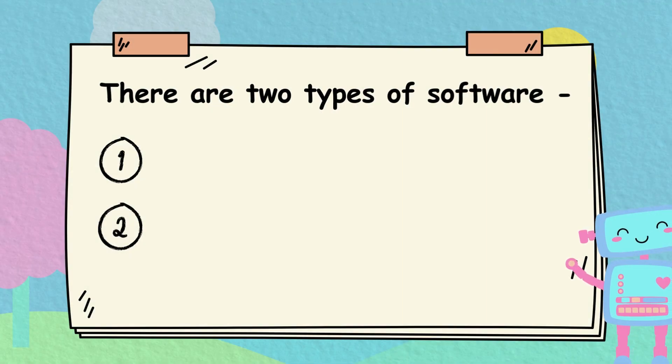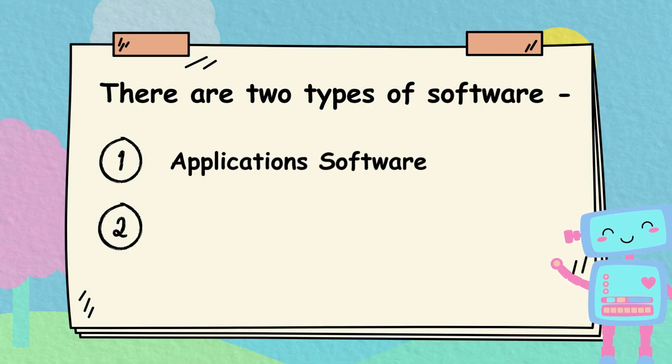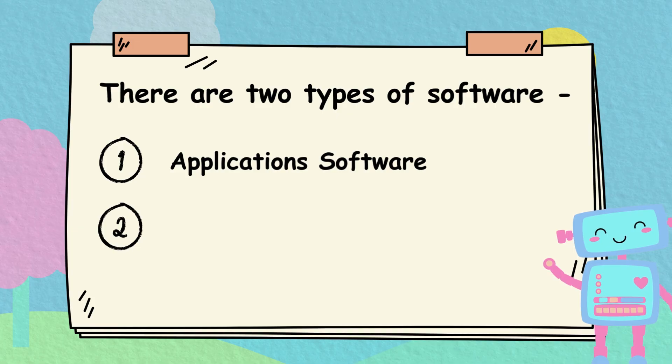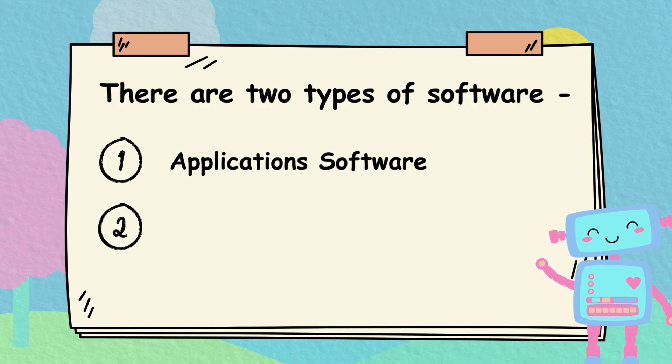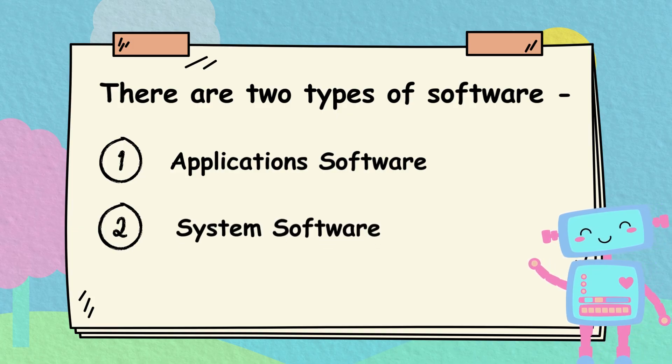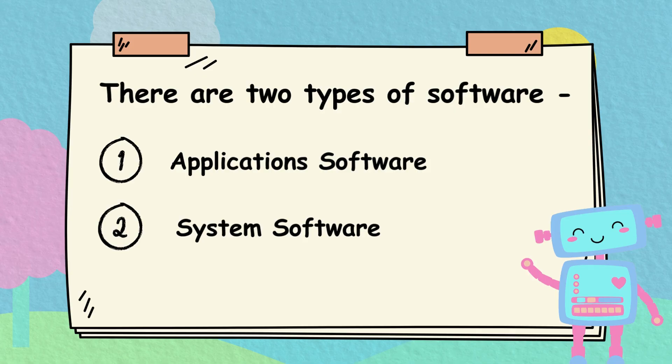There are two types of software: one, application software, and two, system software.